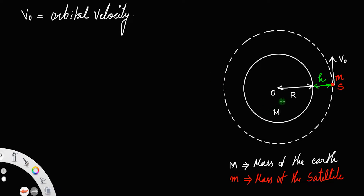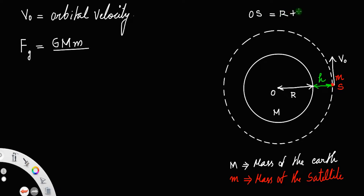We know the mass of the earth as capital M and the mass of the satellite as small m. The gravitational force of attraction between the earth and the satellite is: F_g = G·M·m divided by the distance squared, where the distance OS is equal to R plus h, so the denominator is (R + h)². Call that equation number one.